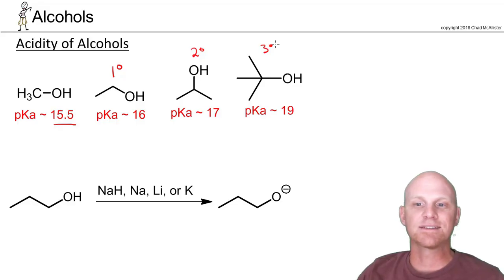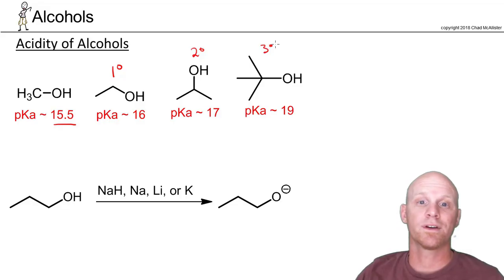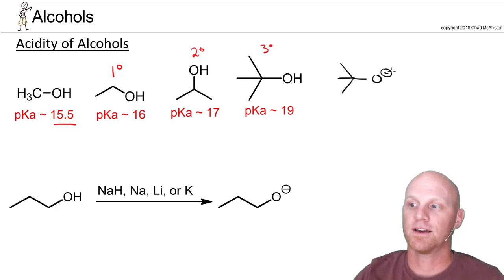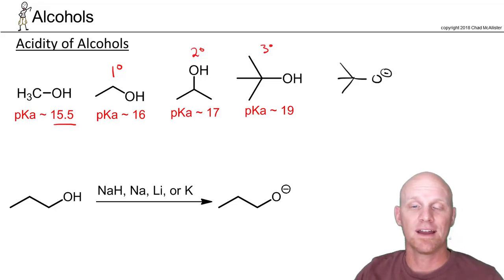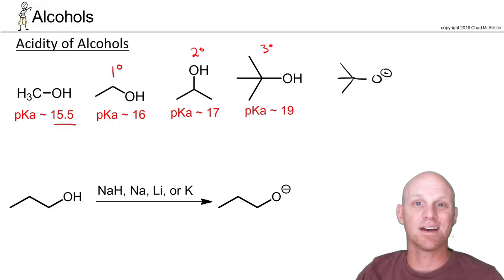This difference in acidity is not something you'd necessarily predict from the ARIO rules alone — maybe a slight inductive effect from the carbon chain, but it turns out it's really more about solubility. The conjugate base of t-butanol is t-butoxide, and t-butoxide is much less soluble in water than methoxide or ethoxide. As a result, it doesn't deprotonate as readily, so t-butanol isn't as good an acid. This difference in pKa is bigger than we'd predict from the rules alone — it's really about solubility.